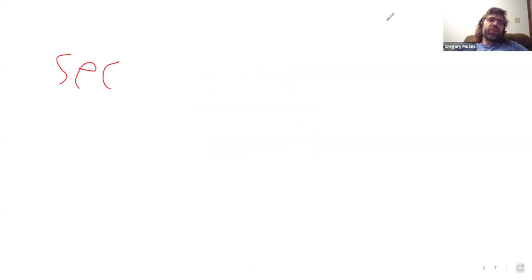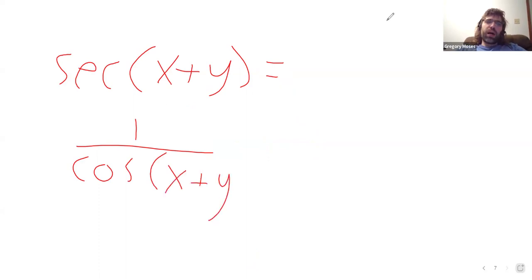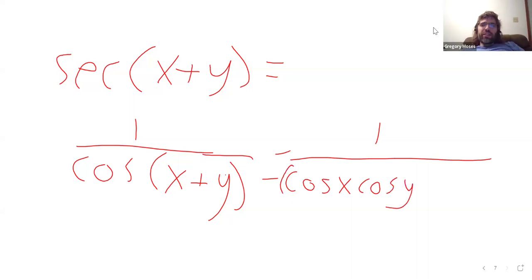You could certainly re-say, well, that's 1 over the cosine of x plus y. And you could use the cosine identity. So, since we get the cosine of x and the cosine of y minus, and then I don't really have room, but minus these signs. So, in this sense, we can rewrite the secant of a sum.